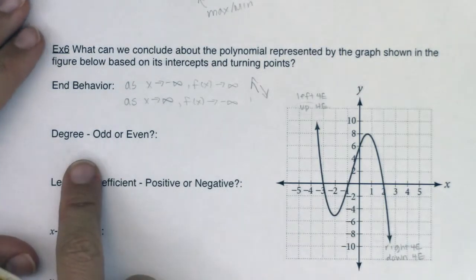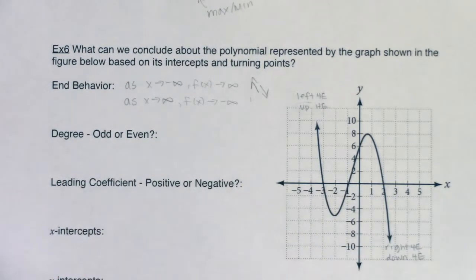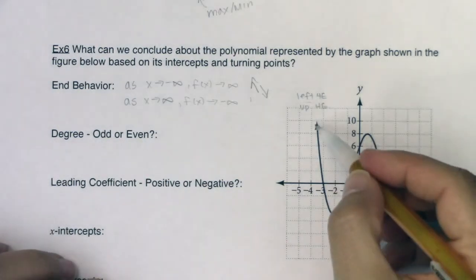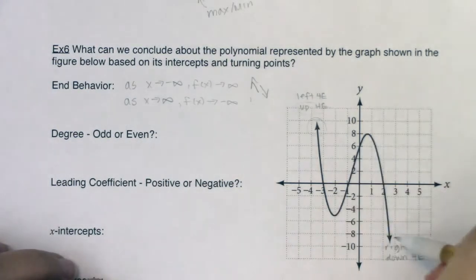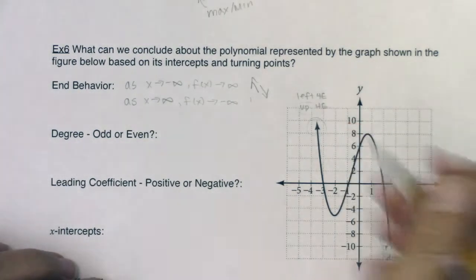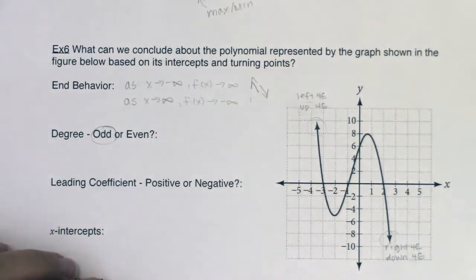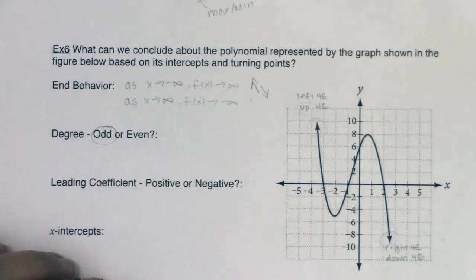So if I was going to find the equation of this polynomial, do we ultimately believe that it would be an odd degree polynomial or an even degree polynomial? Well, if I take a look at it, I want you to see that the ends are in opposite directions. And whenever your ends are in opposite directions, you know you're dealing with an odd polynomial, or at least an odd degreed polynomial.